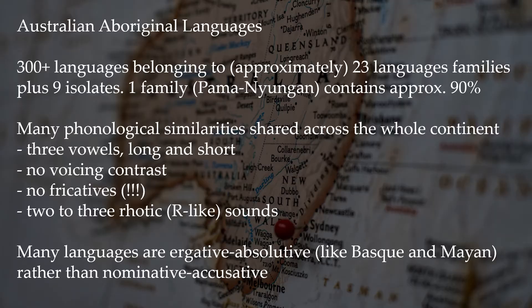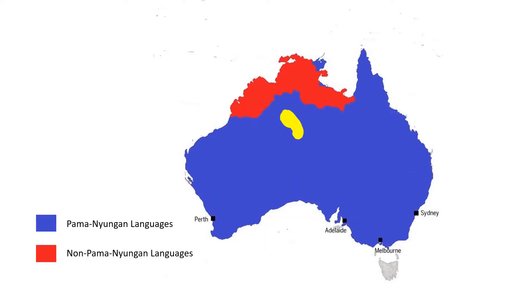Let's take a look at one language. The language we're looking at is called Warlpiri. Warlpiri is spoken in roughly the yellow area here in the Northern Territory. It is one of the more vibrant languages, spoken by about 3,000 people, and it's still being learned by children, which is wonderful.